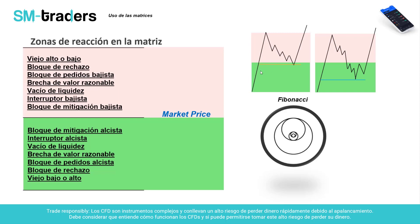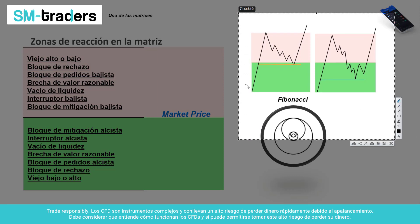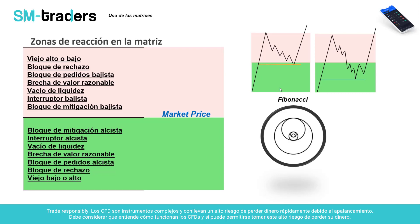Luego vienen los vacíos de liquidez. Un vacío de liquidez, por lo general, se forma en el 50%. Vas a ver que en el 50% muchas veces se genera una vela indetenible, una vela engulfing que pasa el nivel del 50%. Si tú mides un Fibonacci de este mínimo a este máximo, vas a ver en alguna temporalidad que hubo un movimiento alcista de una vela que no se detuvo, una vela engulfing, y se formó un espacio — ese espacio es considerado un vacío de liquidez. Los vacíos de liquidez, por lo general, se encuentran en el 50% como un movimiento ininterrumpido.